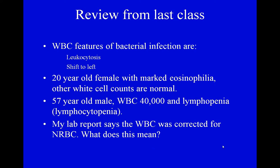The lab report says the white blood cell count was corrected for NRBC. A computer is taught to recognize white blood cells because they have a nucleus and red blood cells don't. But some nucleated red blood cells were present, so the computer counted them as white blood cells when really they're red blood cells. If they've corrected for that, the white blood cell count drops. So if your white blood cell count is elevated, a person will check to see if there were nucleated red blood cells.